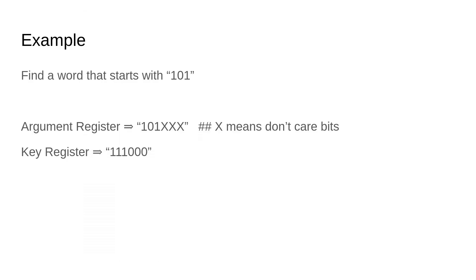Suppose we want to find any word that starts with 101. We would load 101XXX into the argument register and 111000 into the key register, where X means don't-care bits. The match logic will then compare the first 3 bits of each word in the memory with 101, ignoring the rest.